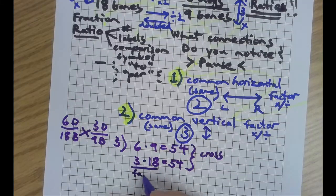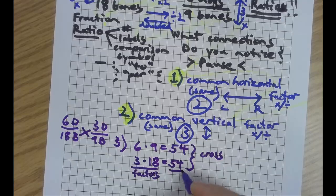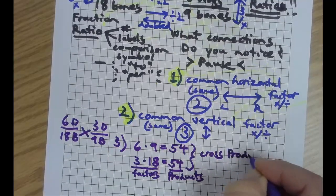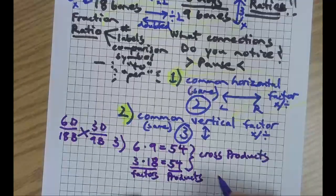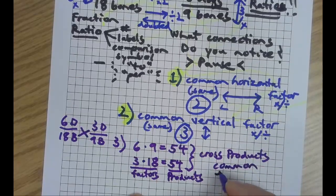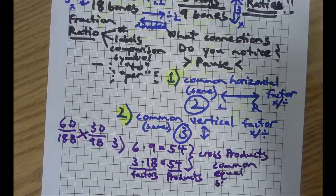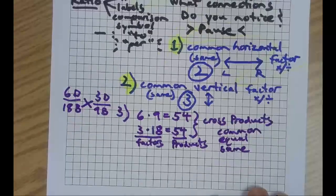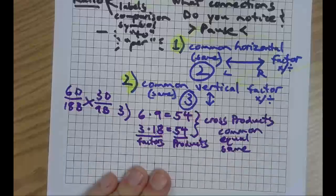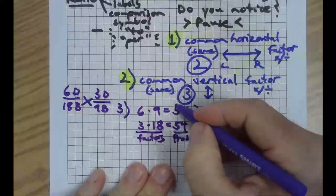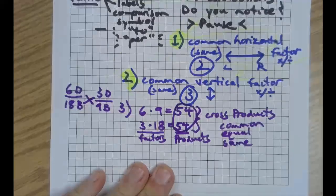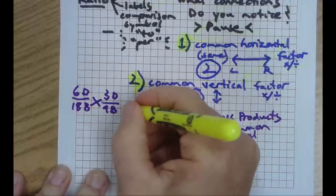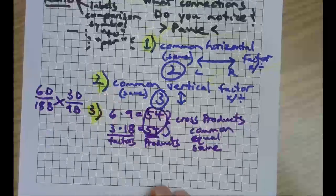Those are called cross products. So of course these are factors. The small ones are factors, and the 54s are the products of those smaller factors. And they match. They're common, right? Equal. All the words. Until they go off the screen. Then we stop. Looks like I better highlight that. So in this case, our common cross products are 54. They're usually going to be different every time.